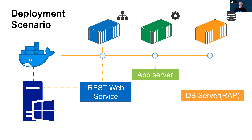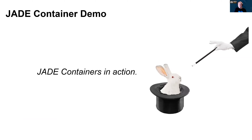Before we look at the demo, let's take a look at a diagram showing a simple Jade deployment comprising a database server, an application server, and a REST web service interacting with an IIS web server in a containerized environment — note that IIS itself is running in a container. I would now like to show you how we can check out some source and use that to deploy a containerized application comprising the above services using the AeroOne sample application running on my laptop. Let's see Jade containers in action.